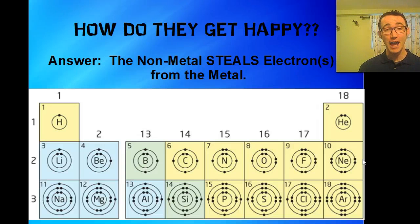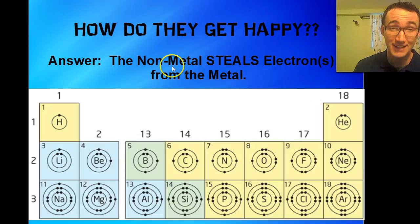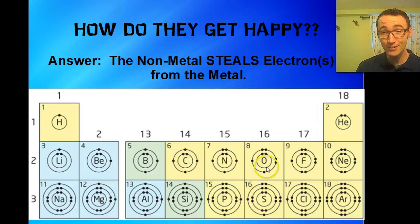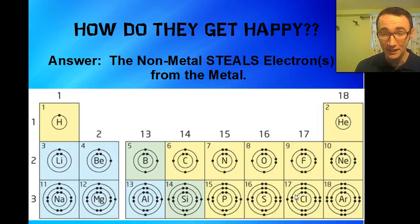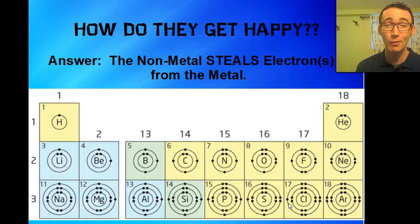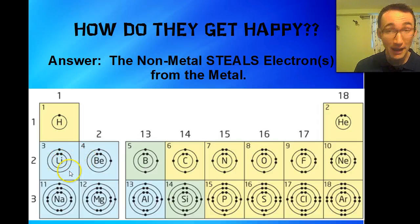So how do you get happy? The non-metal will steal the electron from the metal. Chlorine is so close to being happy — it has seven electrons in its outer shell, so it only needs one more electron to become happy. So what will happen is it will steal an electron from a metal, and it will become happy.